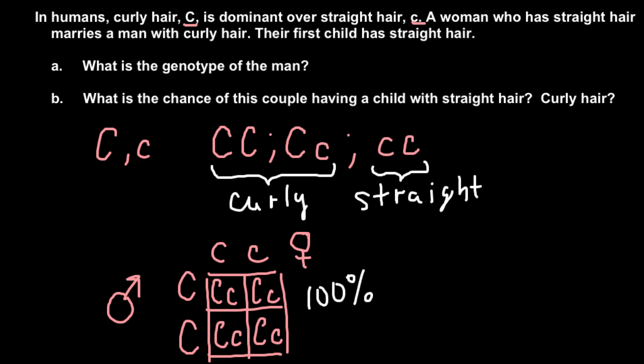So let's now consider a different cross. Once again, the female can be only small c, small c. And the male, this time we take capital C and small c. So now let's see what kind of progeny they can produce. So here we would have capital C, small c, and here we would have capital C, small c, and small c, small c here, small c, small c here.